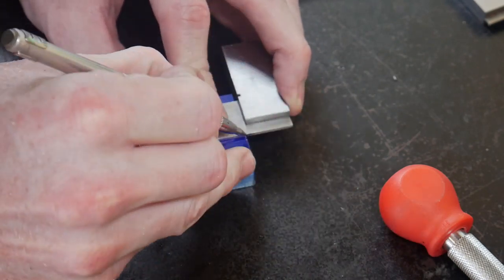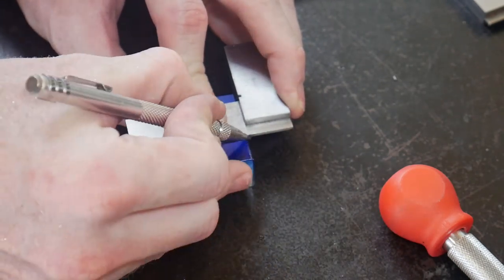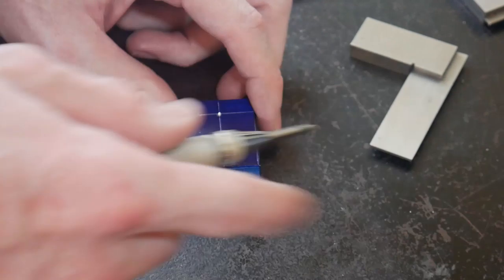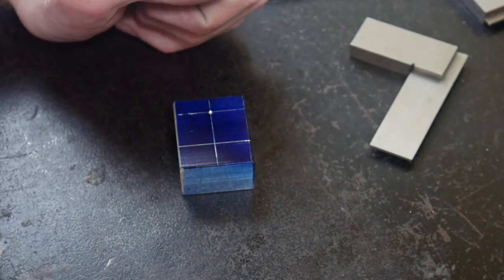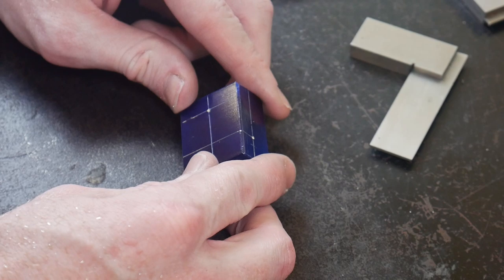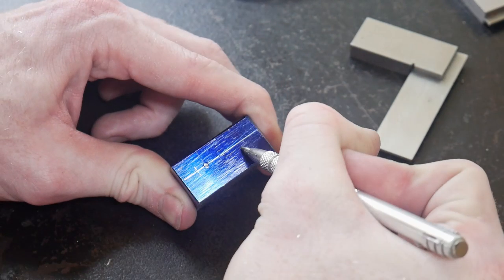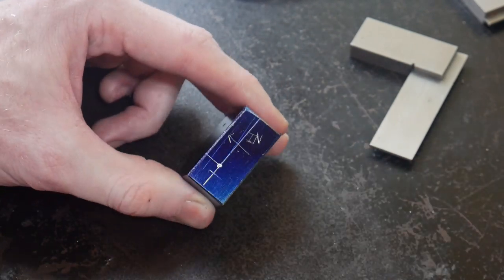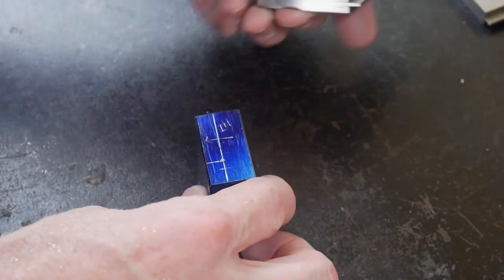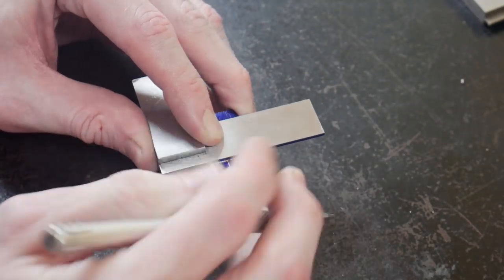I offset that hole a little bit to the side to maximize the amount of threads that my set screw will have to hold the scribe into the piece. The last hole we'll be marking out is for the set screw, and as you saw there I almost put it on the wrong side. I want the beefier side to have the threads in it to maximize the set screw's retention in the piece.